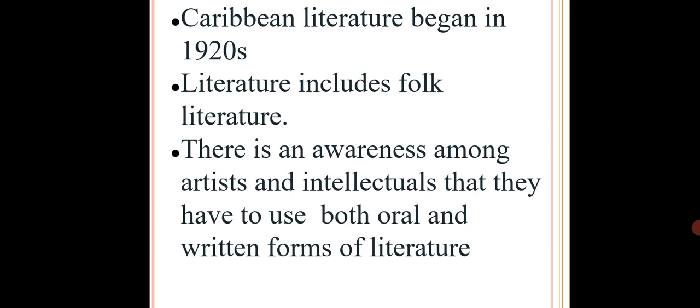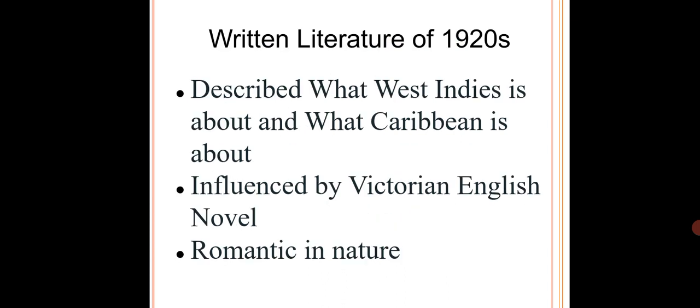He says that during this period, among artists, scholars, and intellectuals, there was an increasing awareness that they had to write both in oral tradition as well as in the written form. Talking about the written form of literature that began in 1920, Brathwaite says it involves certain novels and short stories written by West Indians and one or two Englishmen who lived in West Indies, who tried to describe what West Indies and the Caribbean were about.